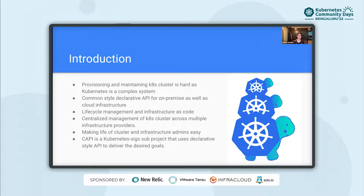This situation gets worse when you have to operate Kubernetes clusters on different infrastructure providers, for example AWS, Azure, GCP, vSphere, etc. Though KubeADM is a tool that solves the problem of installation, it does not help with the complete life cycle and management. Cluster API is a Kubernetes SIG project that addresses all these problems.